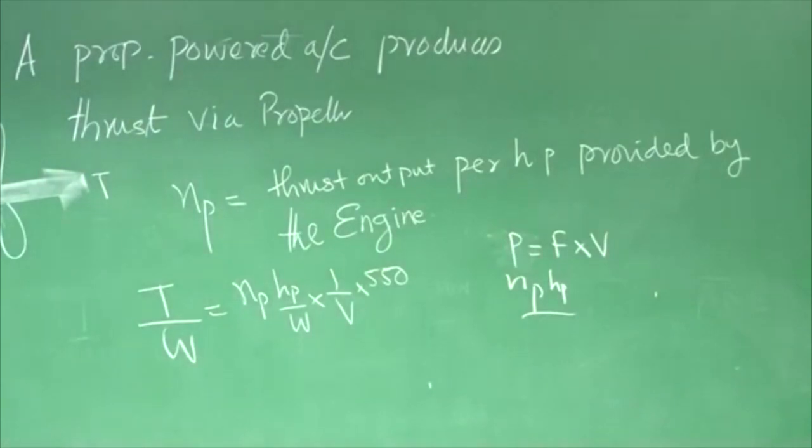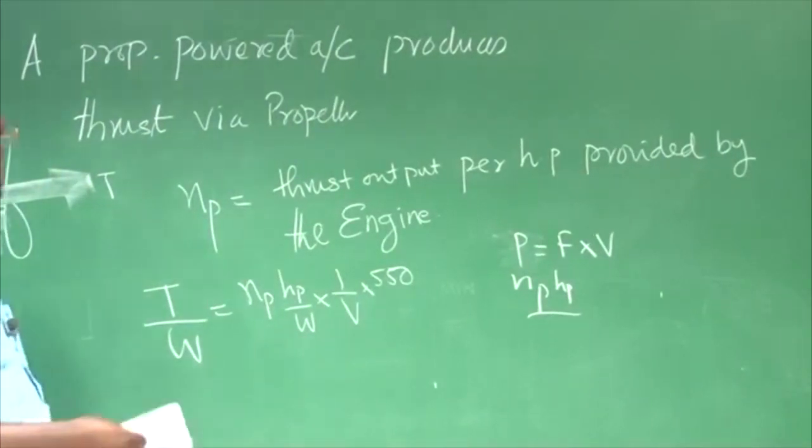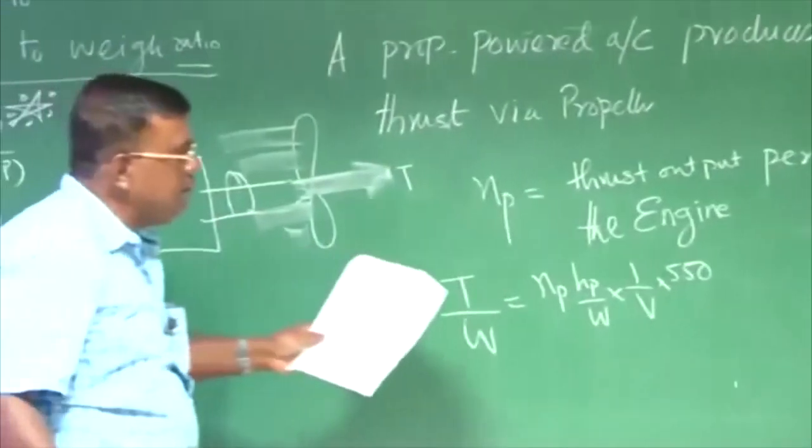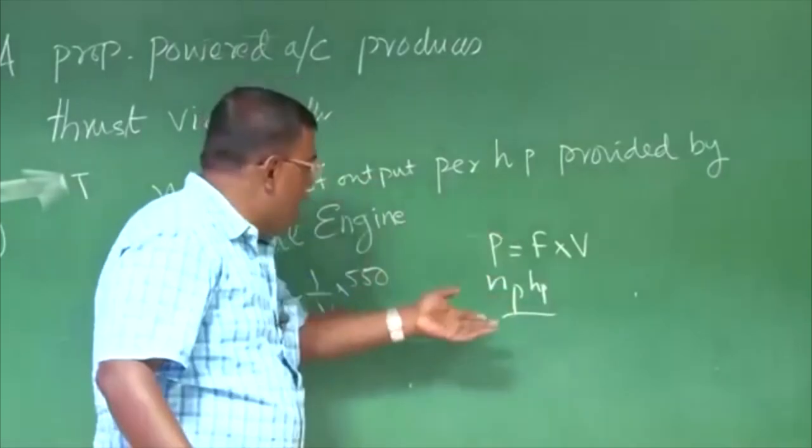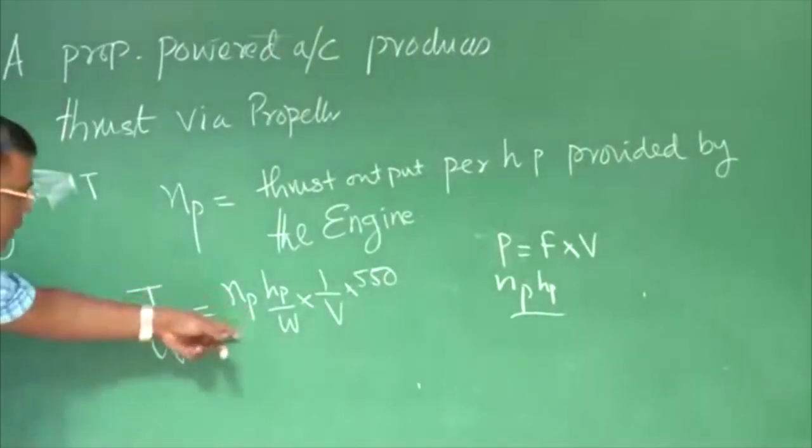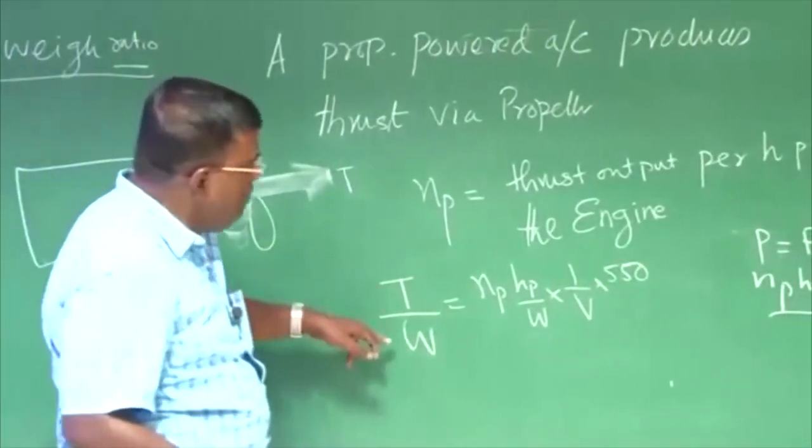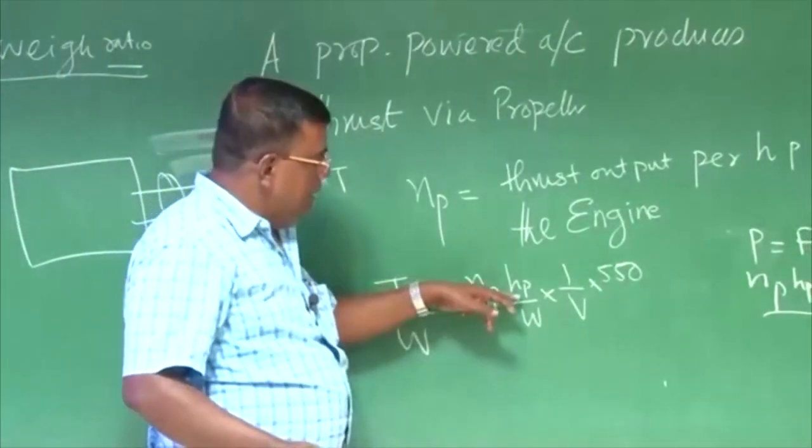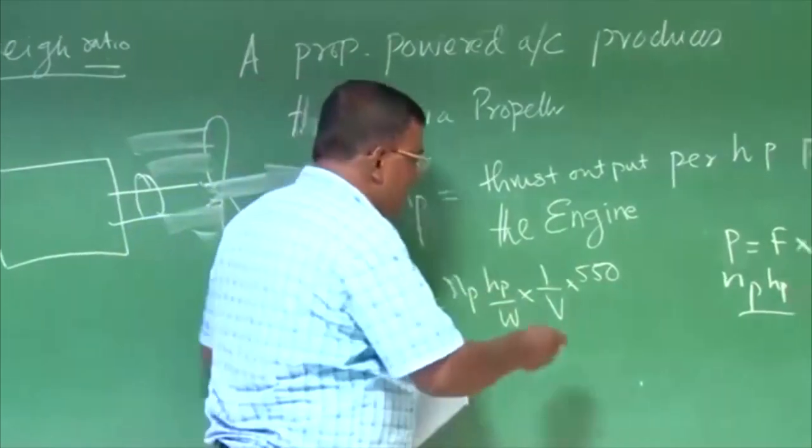So T by W is defined as NP into HP by W, 1 by V, and of course 550, you know that FPS when it, 550 comes because of horsepower has to be converted into watt in FPS. Why this V has come? After all, if it is cruising, power is nothing but force into speed. So that concept has been used here.